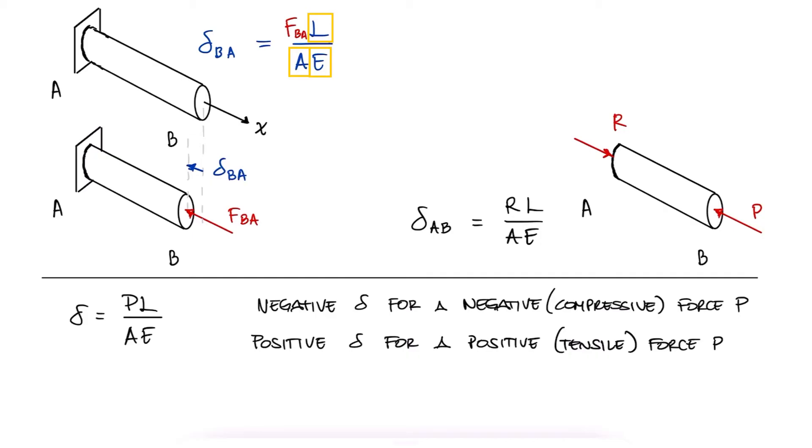Notice that the length, area, and elastic modulus are always positive, so the displacement direction will always be determined by the force, in this case the force that affects B, which is following the same index convention we used in the axial loading video before, from B to A.